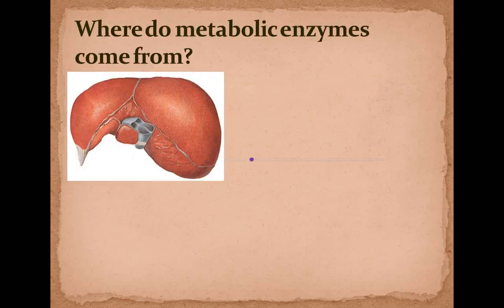They live in the liver. These digestive or metabolic enzymes are in the liver, which means the only time these drugs get access to the metabolic enzymes is when the blood goes through the liver. Almost all of our blood passes through the liver before it goes to the rest of the system.